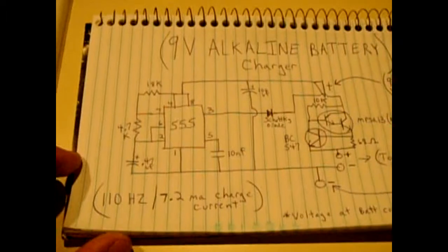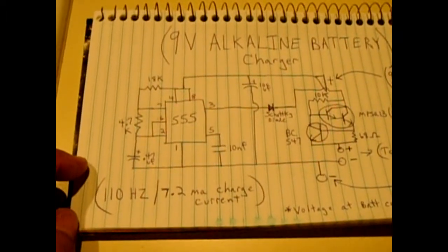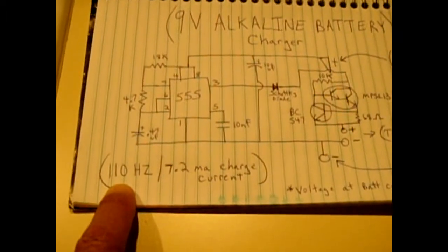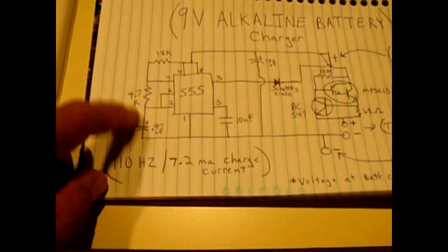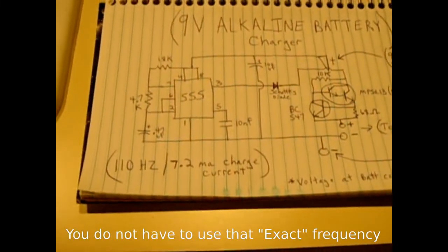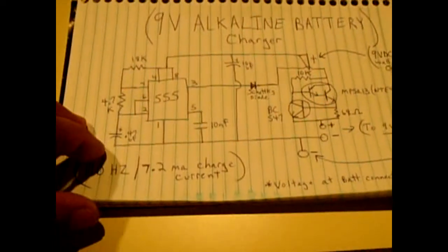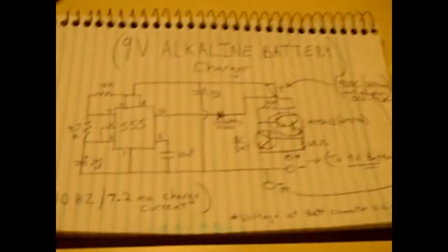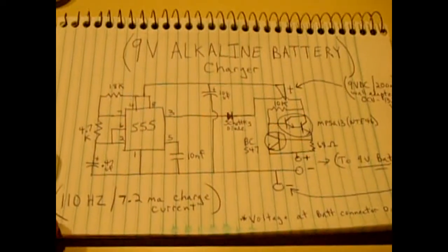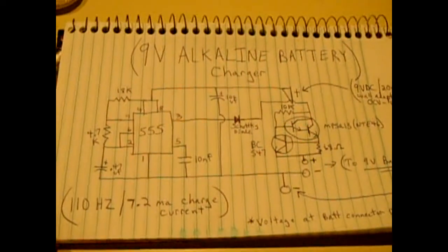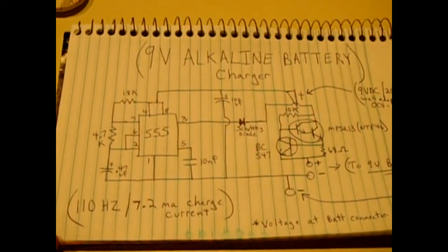If you don't have a 555 IC you can also use a CD4047. There are online calculators for calculating the 110 hertz, it'll tell you which values you need for the resistors and capacitors. If you enjoyed this video please subscribe and post links to this video on other websites and blogs. Thank you very much.